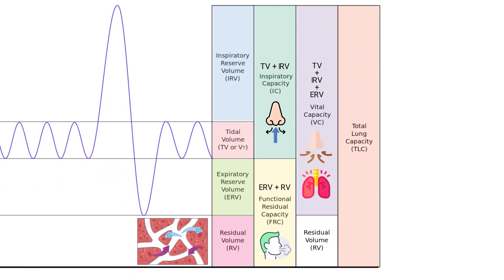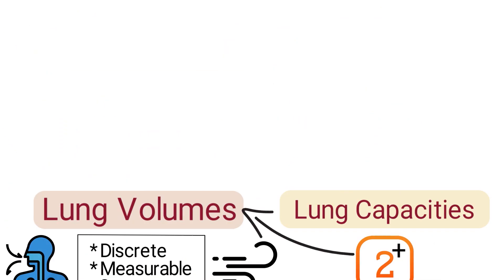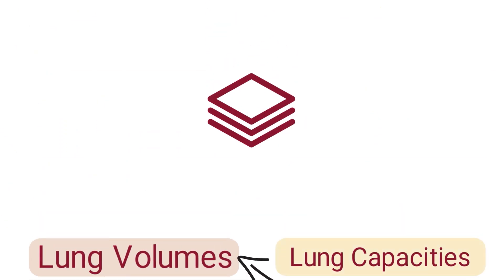Total lung capacity is the total volume of the lungs when fully expanded. It is the sum of all lung volumes and can be calculated by adding the tidal volume, inspiratory reserve volume, expiratory reserve volume, and the residual volume. It can also be calculated by adding the vital capacity to the residual volume.